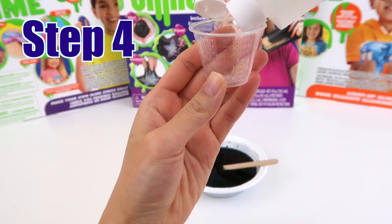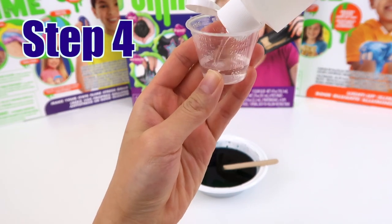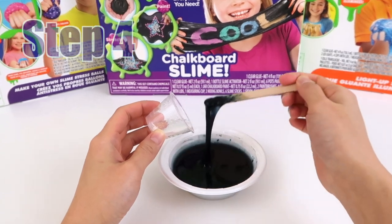Step 4. Measure and slowly pour 7.5 ml of slime activator.